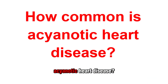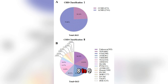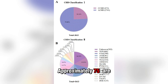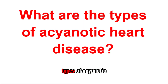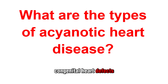How common is acyanotic heart disease? Congenital heart disease affects 8 to 9 per 1,000 live births, and approximately 75% are acyanotic. There are several kinds of acyanotic congenital heart defects.